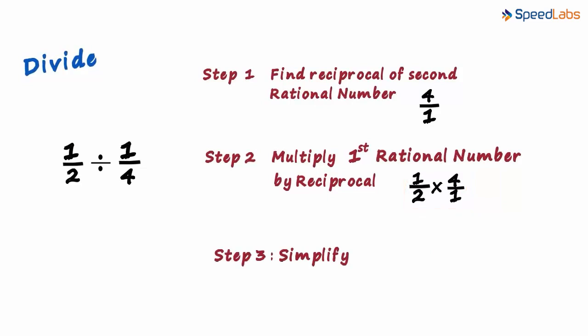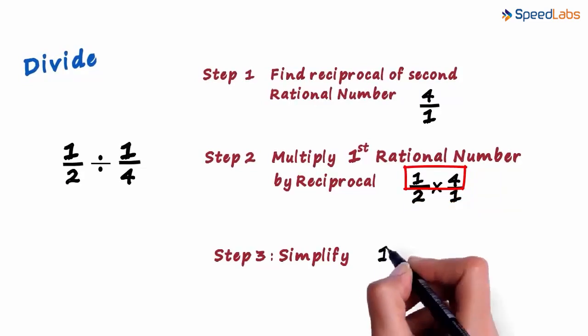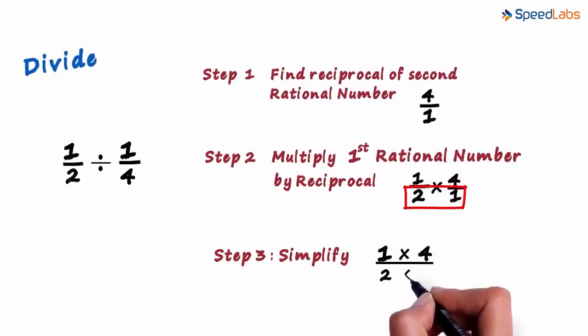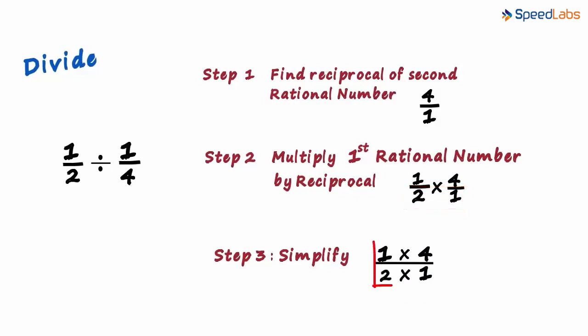The third step is to simplify the expression. We multiply the numerators and keep the product in the numerator and multiply the denominators and keep the product in the denominator and then simplify.